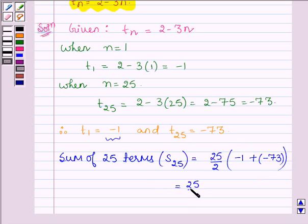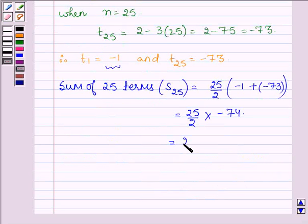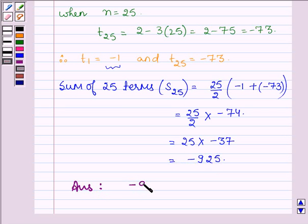And this is equal to 25/2 into -74 which is equal to 25 into -37 and on multiplying we get -925. Hence, our answer is the sum of first 25 terms is -925.